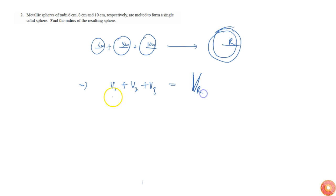So we can write: four by three pi times r1 cubed plus four by three pi times r2 cubed plus four by three pi times r3 cubed. This is the sum of all three small spheres, which equals four by three pi times capital R cubed.